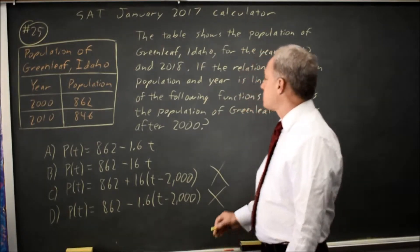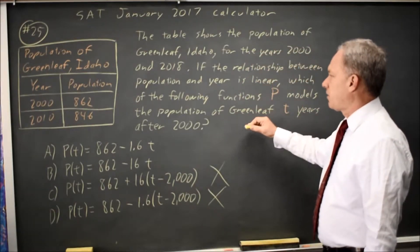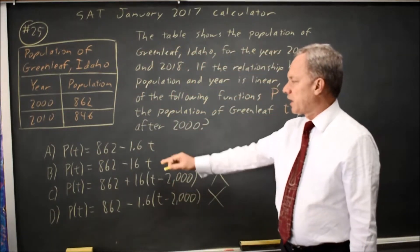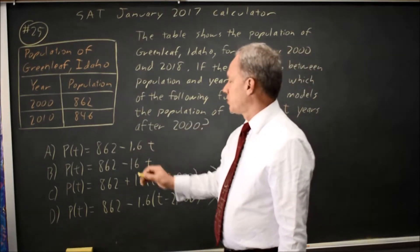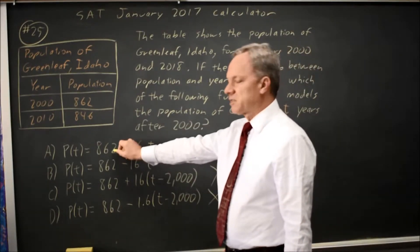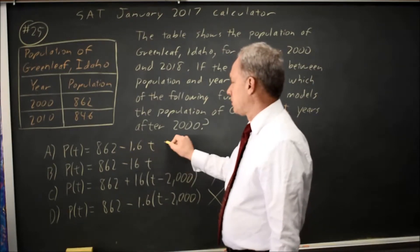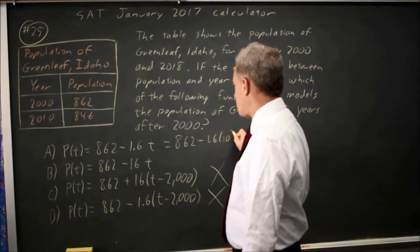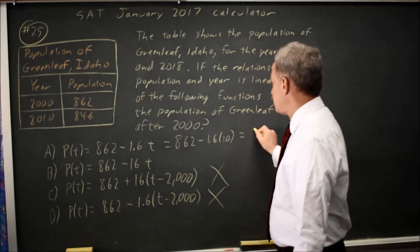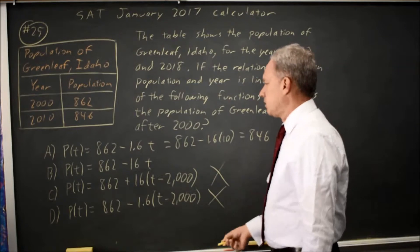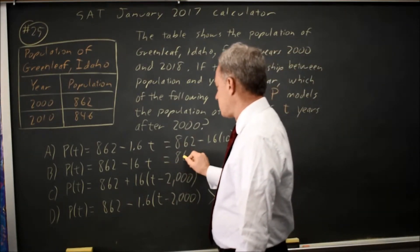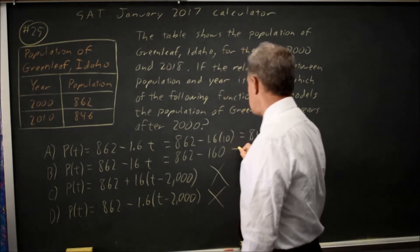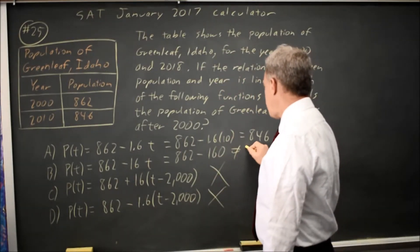If you check at T years after for the year 2010, that's 10 years after. 10 years after, we should get 846, and at T equals 10, I get 862 minus 1.6 times 10, which is 862 minus 16 is 846. Choice B at T equals 10 gives me 862 minus 160, which is way below 846.